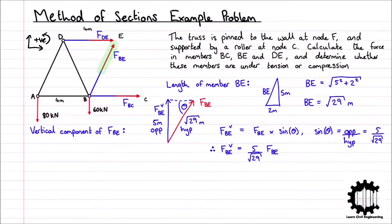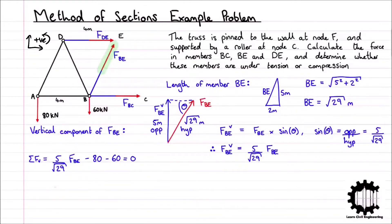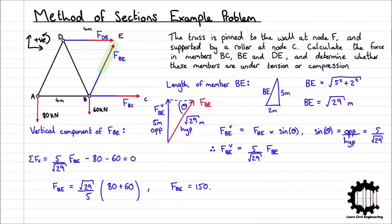Now that we have determined the vertical component of FBE, we can apply the conditions for equilibrium by taking the sum of all vertical forces to equal zero. Taking the y-coordinate direction to be positive: (5 / √29) × FBE − 80 − 60 = 0. Rearranging for FBE gives FBE = (√29 / 5) × (80 + 60) = 150.78 kN. As we assumed the internal force to be tensile and our value for FBE is positive, the force of 150.78 kN in member BE is tensile.